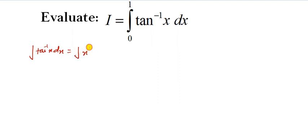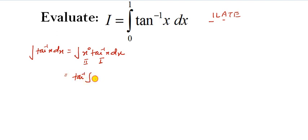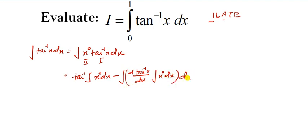We write it as the integral of 1 times tan inverse x dx. Using ILATE, inverse trigonometric functions come first and algebraic functions come second. So, tan inverse x is the first function and 1 is the second function. The formula gives: first function times integral of second function, minus the integral of [differentiation of first function times integral of second function] dx.